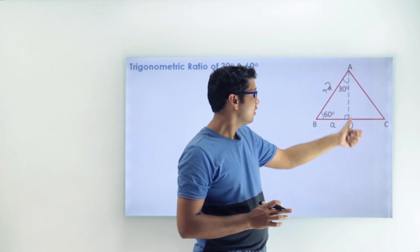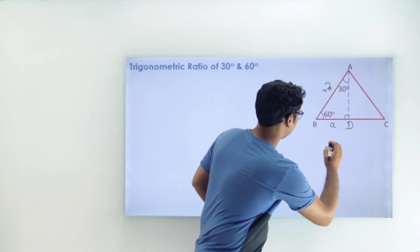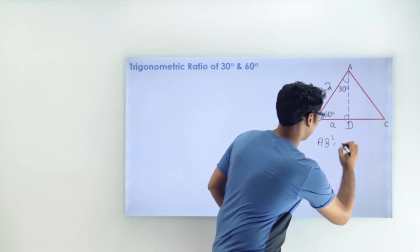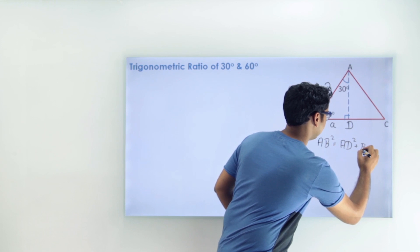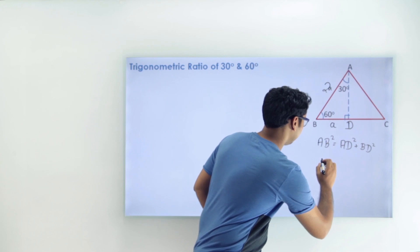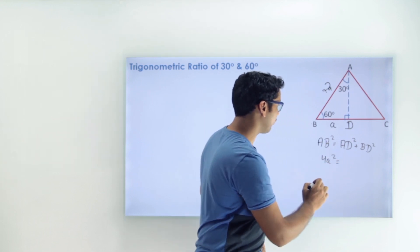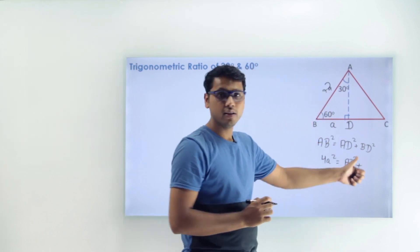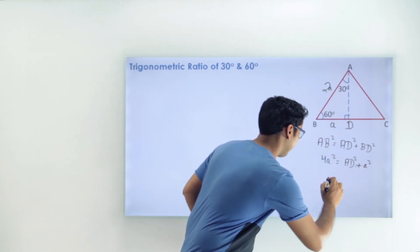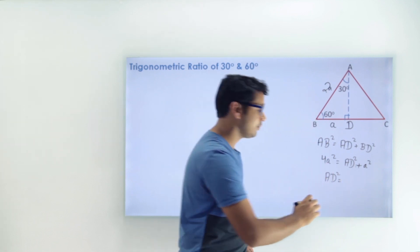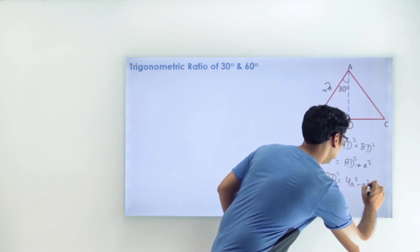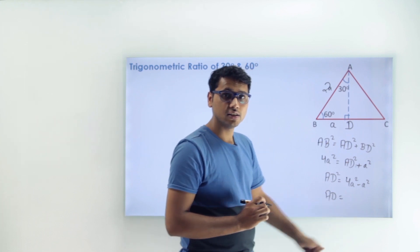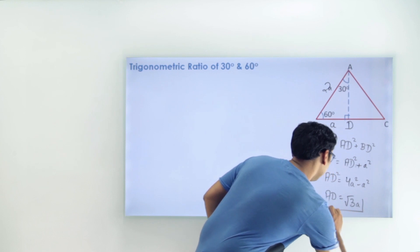We can find the value of AD by applying the Pythagorean theorem in triangle ADB. AB² = AD² + BD². Substituting: (2A)² = AD² + A², so 4A² = AD² + A², giving AD² = 3A². Taking the square root, AD = √3A.